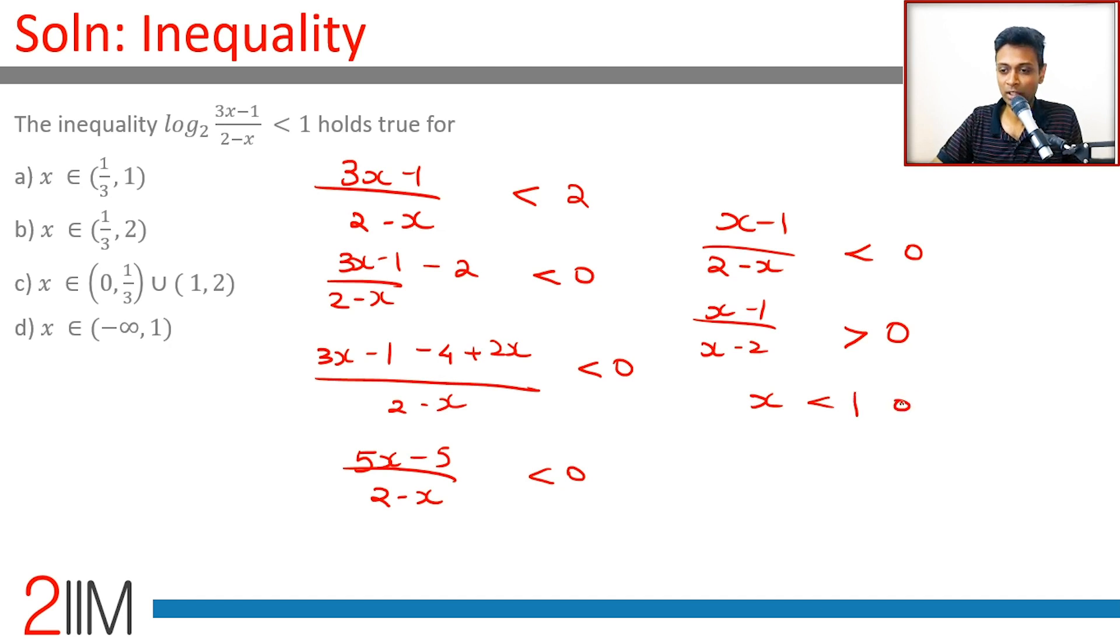(x-1)/(x-2) is greater than 0, means either x is less than 1 or x is greater than 2. Already we know x should lie between 1/3 and 2.